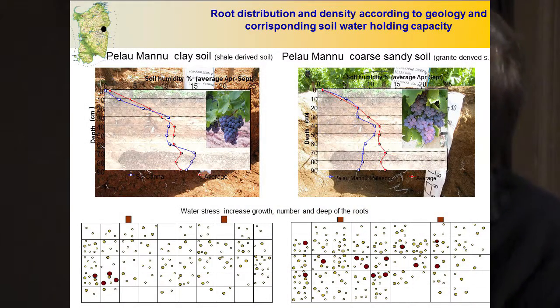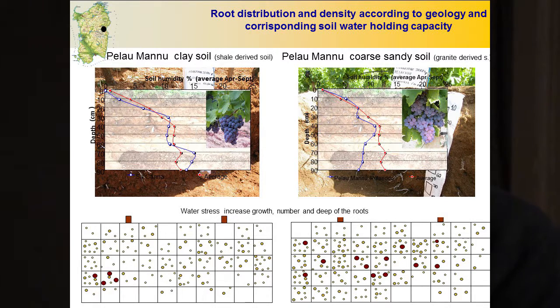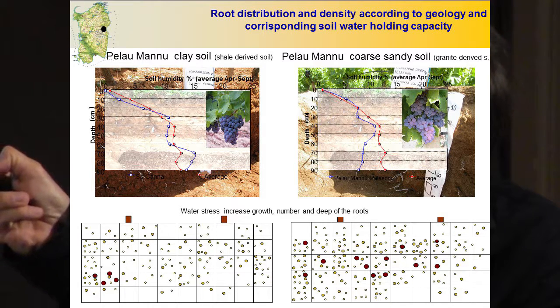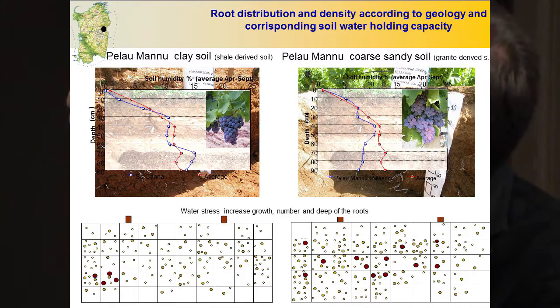We did this work in the middle part of Sardinia, and it was very interesting — very often, to find in the same block, vineyards very close to each other, but in some cases we have clay soils derived from shale, and in other cases coarse sandy soil derived from granite — but in the same places, probably the same region. The pedologist told me the region was metamorphic in both cases. Depending on the soil, there are also different hydrological characteristics, and therefore different root distribution and root density, because of different water availability.